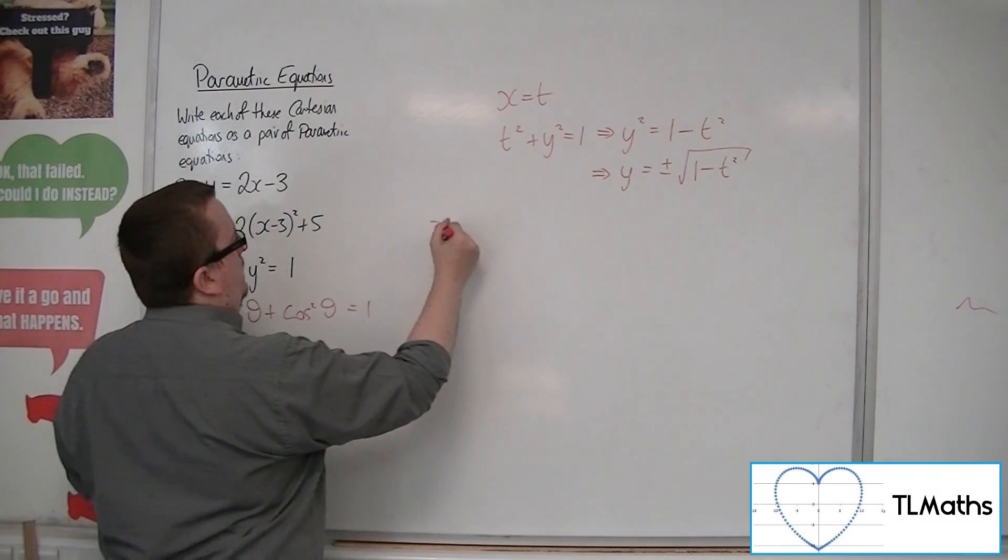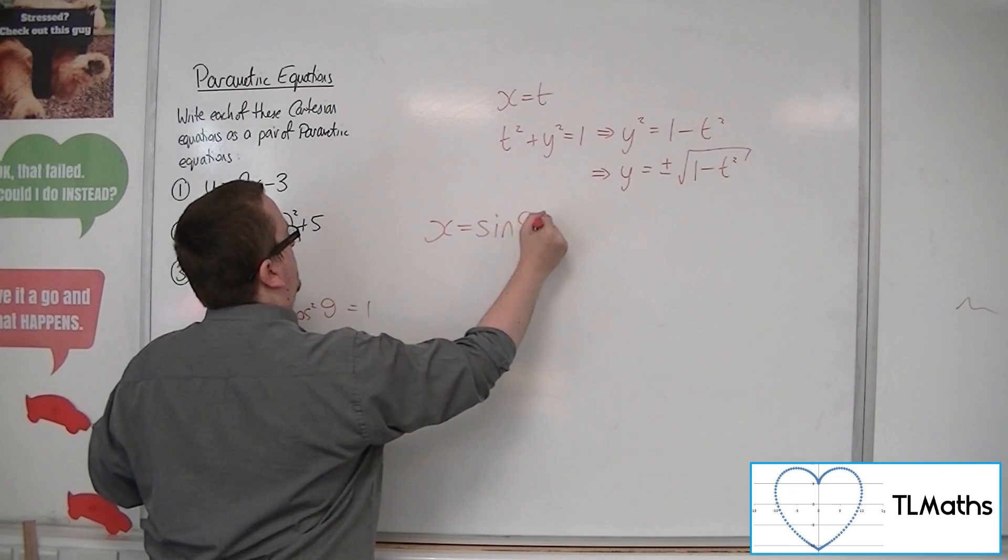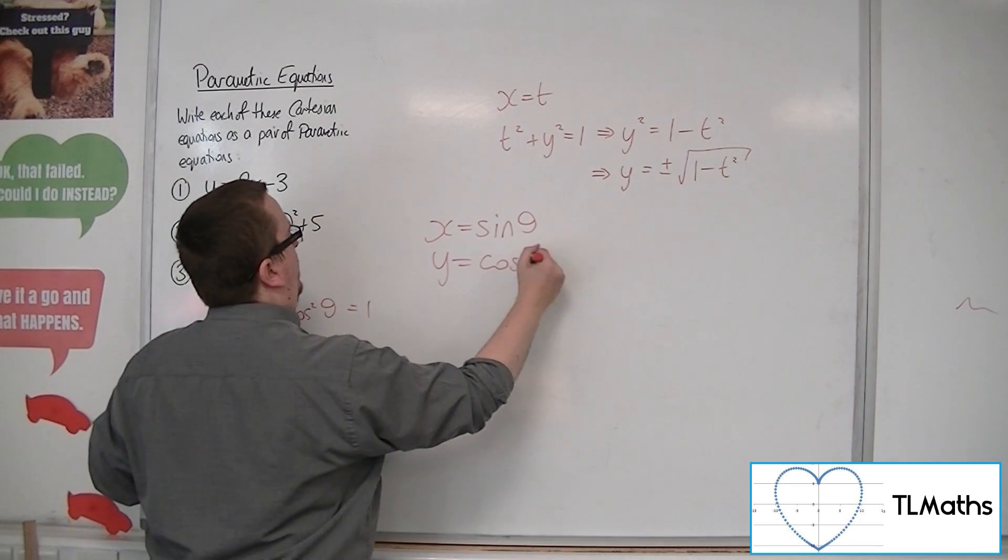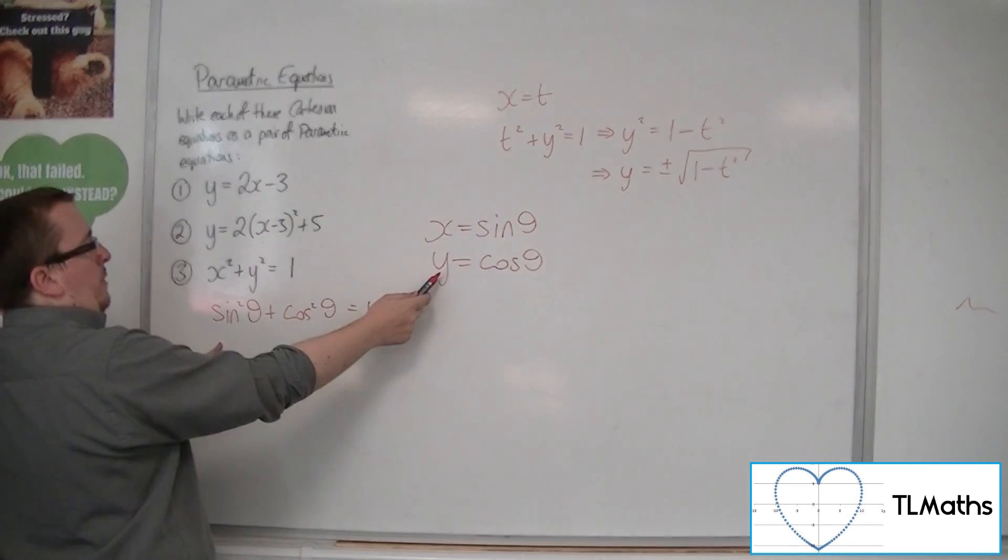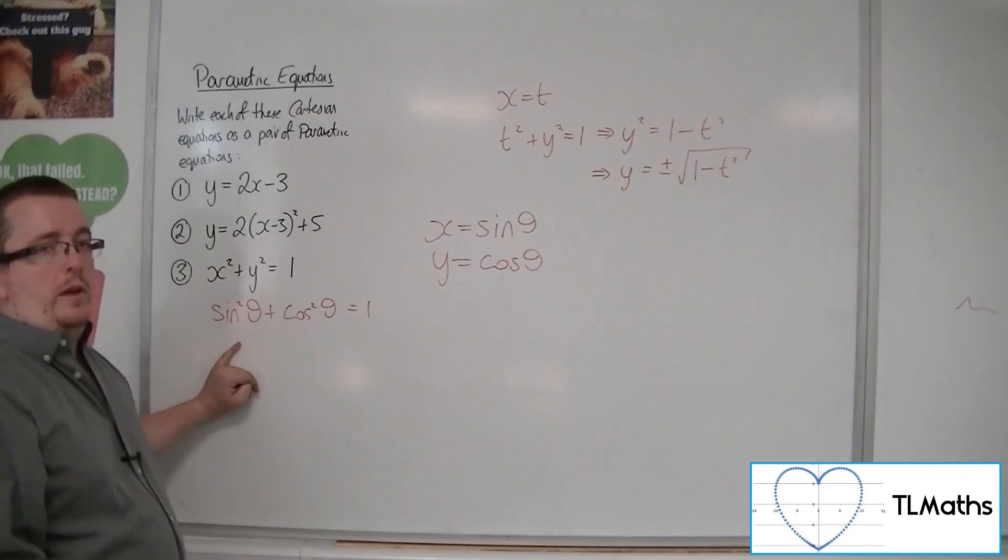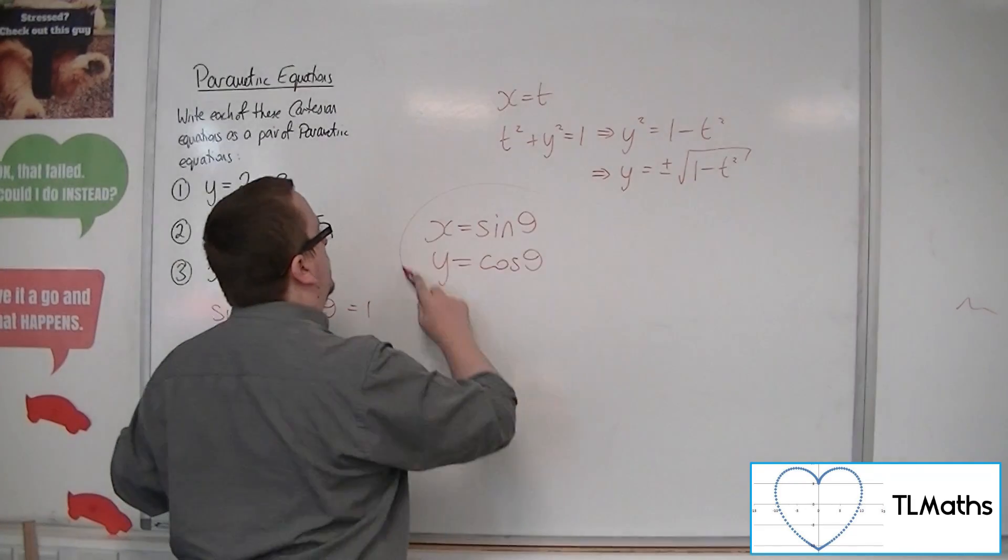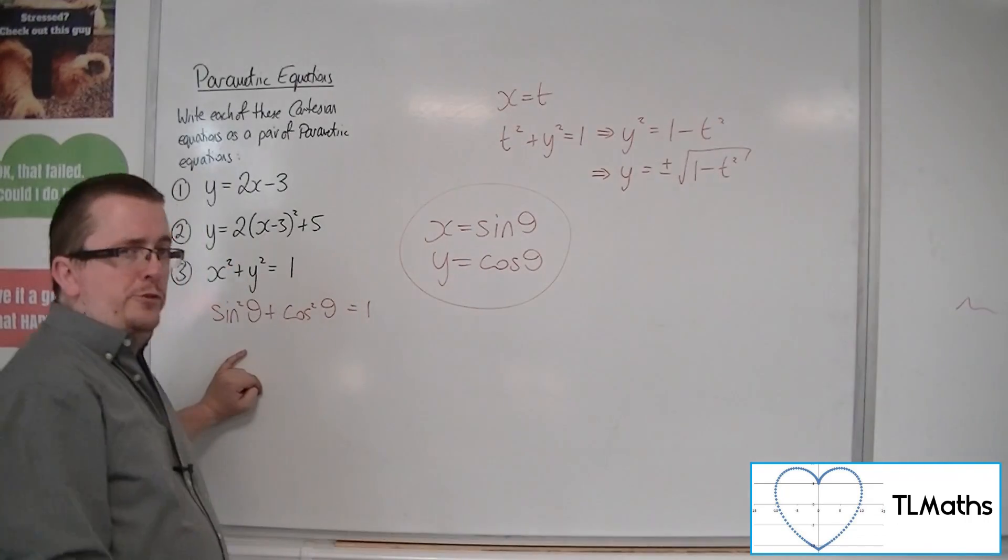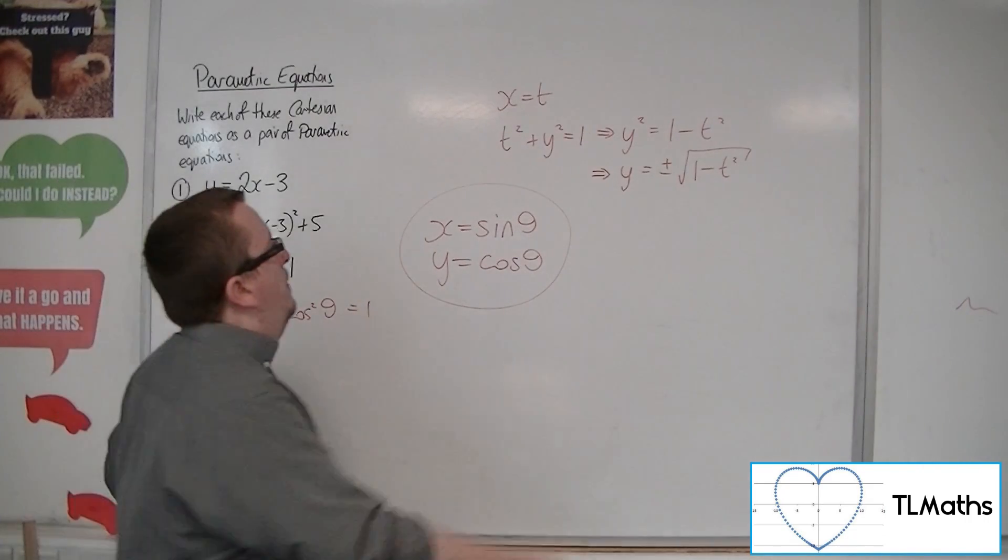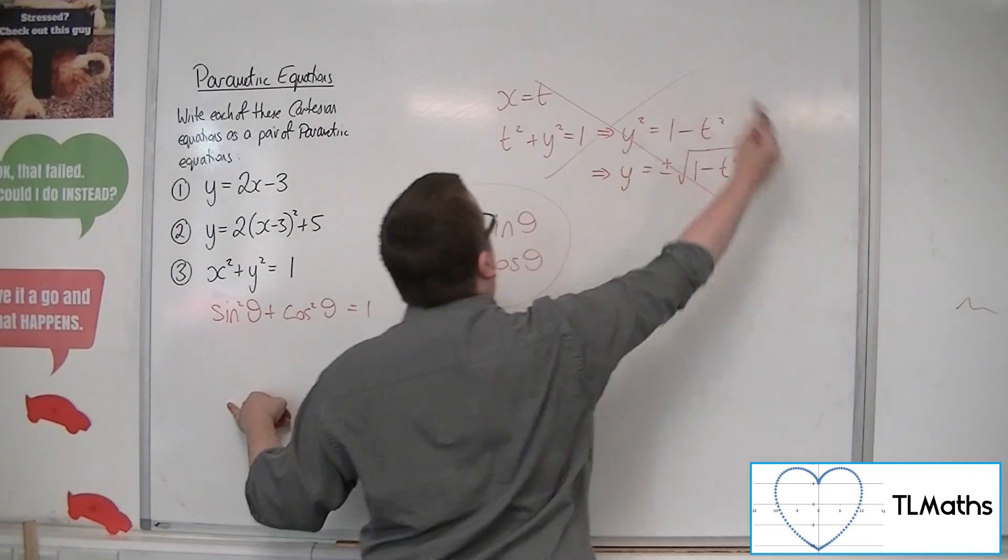So the fact that we could say sine squared plus cos squared is 1, I could say, well, x is sine theta, y equals cos theta. X squared plus y squared is sine squared plus cos squared. So you could define the circle using those two parametric equations. Much better than those.